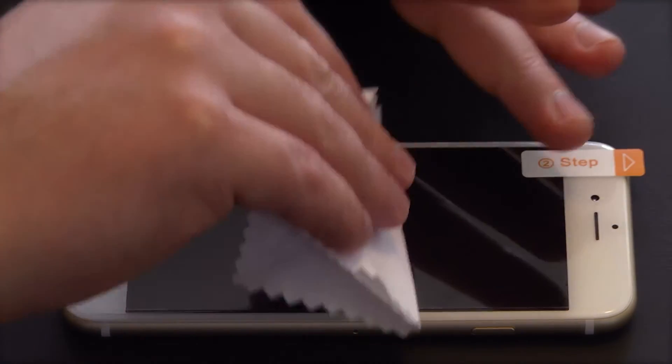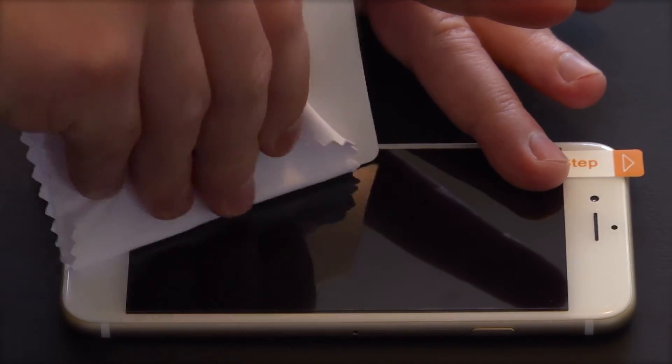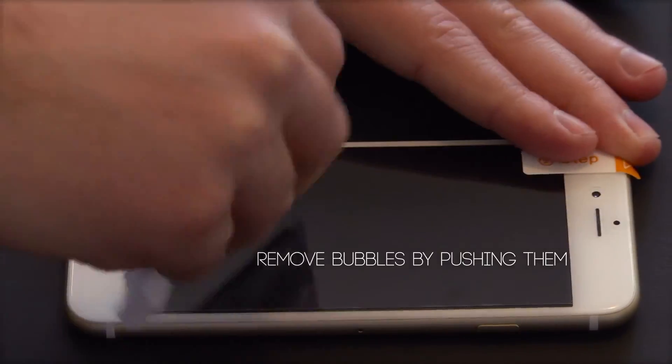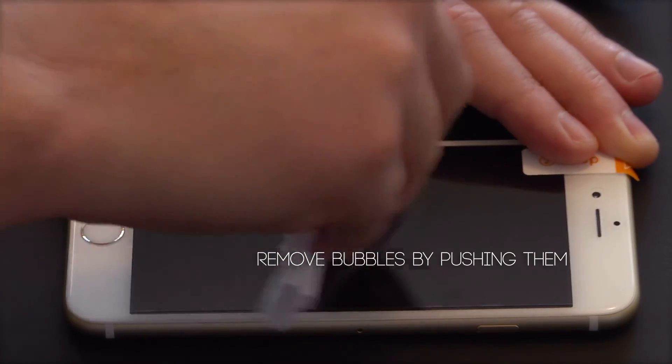When the screen protector is fully applied, wrap the squeegee in the microfiber cloth and work out any bubbles by pushing them from the center of the screen outwards.